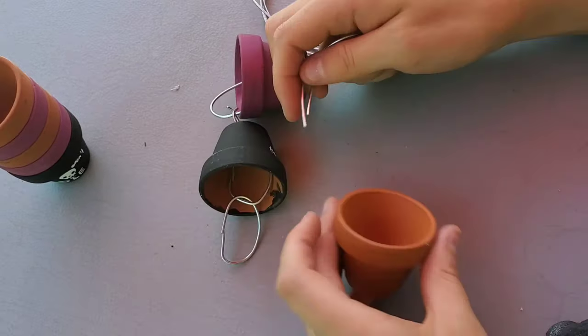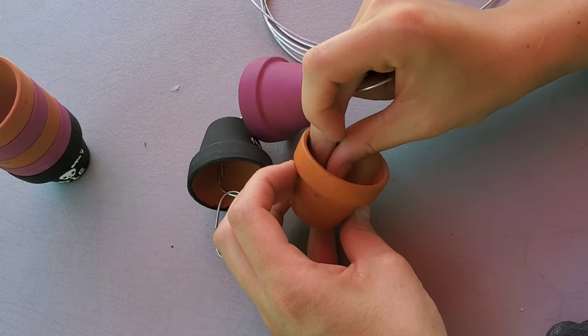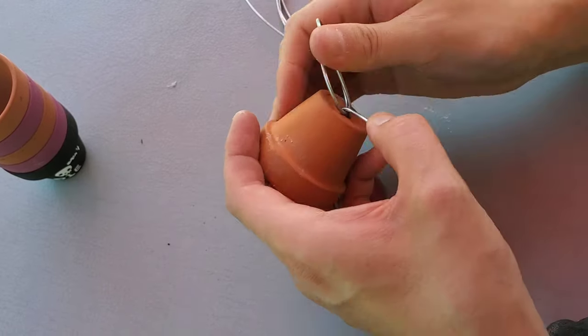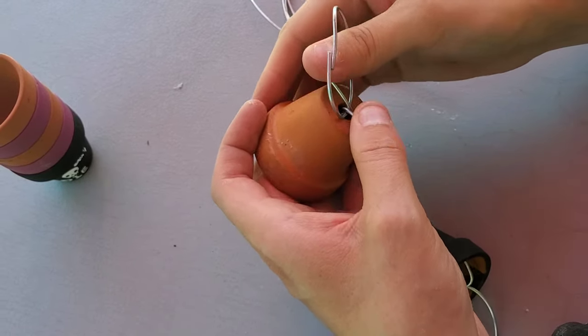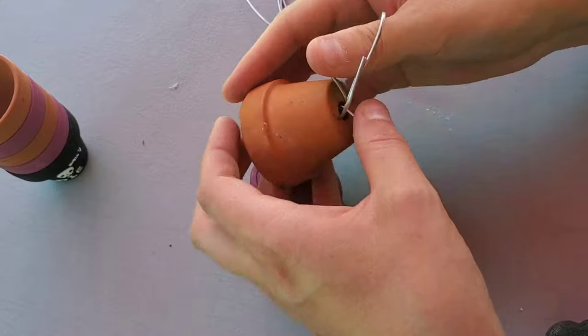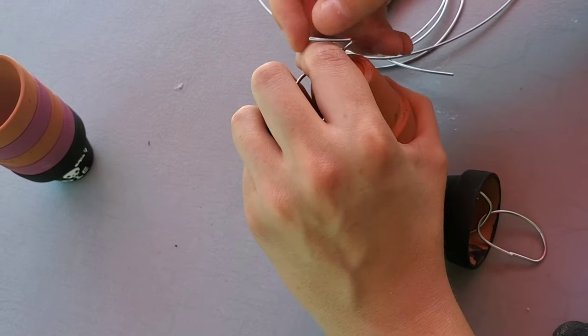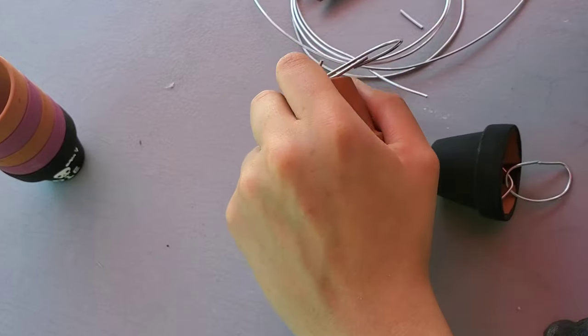As you move on to the next terracotta pot, you're going to take these two pieces, slip it through the bottom hole, take one of the chains you've made, take both pieces that are at the bottom poking out, secure this chain, and then cut off any extra so it's not sticking past the bottom of the terracotta pot.